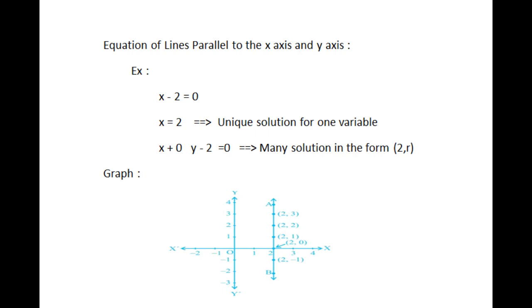If it is two variable, it can be expressed as x plus 0y minus 2 equal to 0. This has infinitely many solutions. They are all the form of 2 comma r, where r is any real number. The equation in two variables, x minus 2 equal to 0, is represented by the line AB in the graph shown in figure.